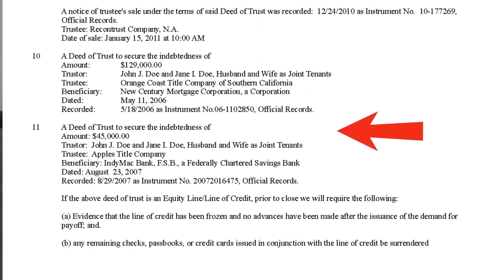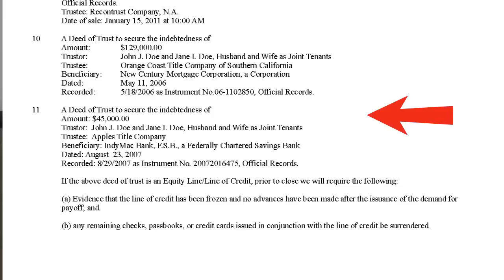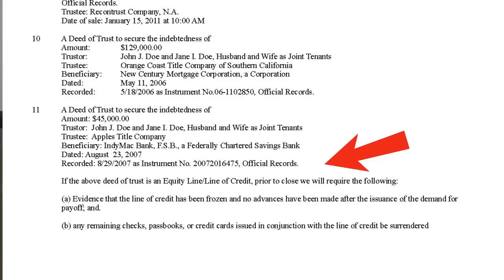Items ten and eleven represent a junior subordinate lien — another deed of trust recorded concurrent to the previous deed of trust shown in item nine, and therefore subordinate to it. An equity line of credit is a deed of trust to secure future advances. If the deed of trust above is an equity line of credit, prior to close we will require evidence that the line of credit has been frozen, that no advances have been made after the issuance of the payoff demand, and that any remaining checks, passbooks, or credit cards issued in conjunction with the line of credit have been surrendered.